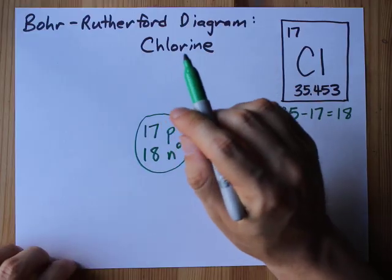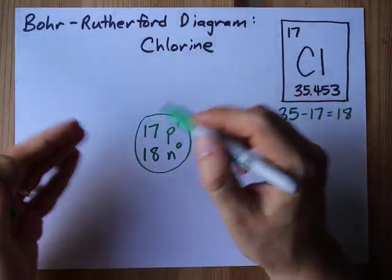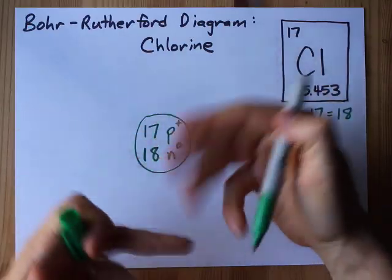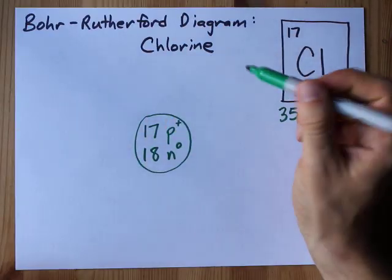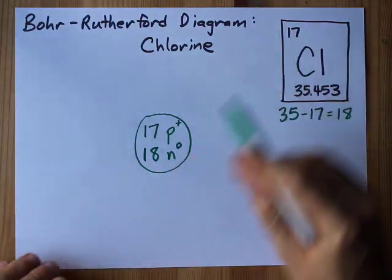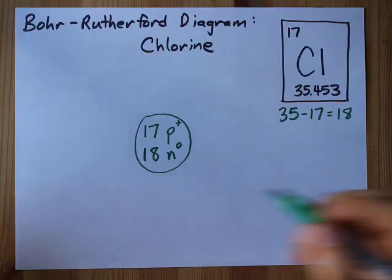The only time the number of electrons is going to be different is if your teacher tells you this is like chloride or chlorine with a minus one charge or something like that. If they haven't mentioned a charge, it's the same as the number of protons: 17. So let's get it.